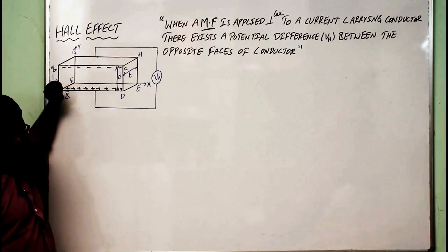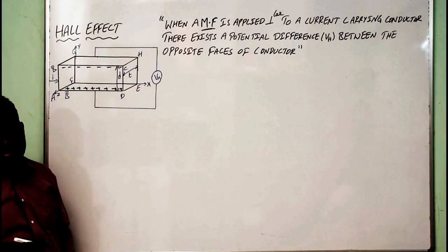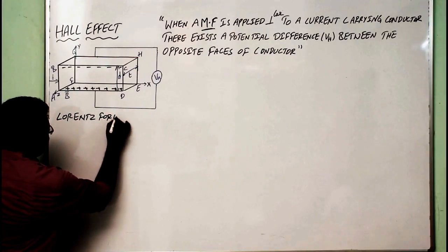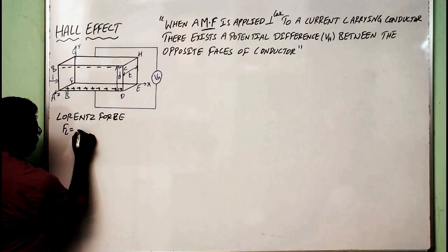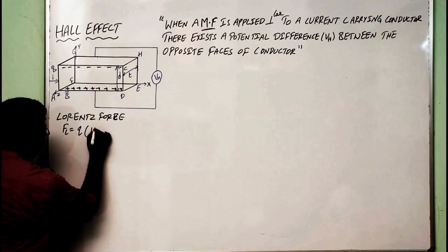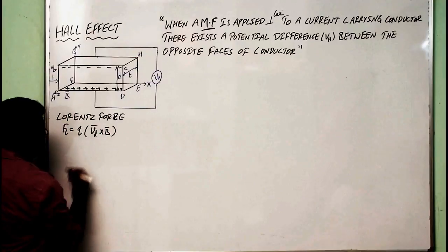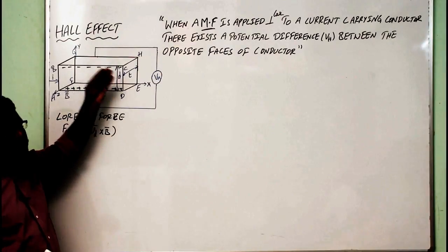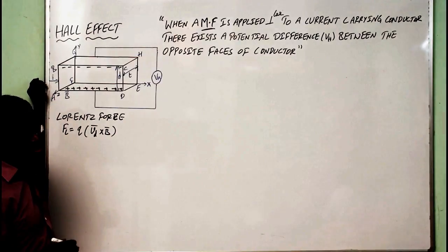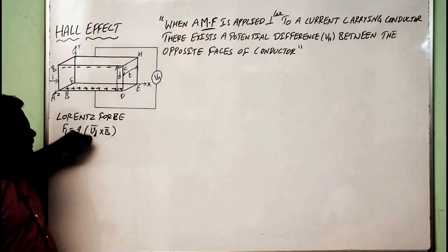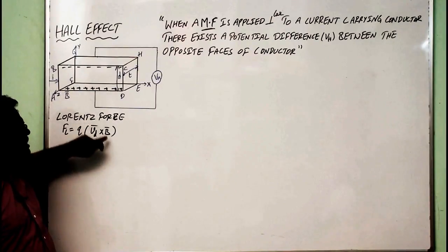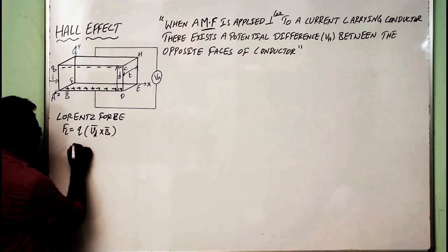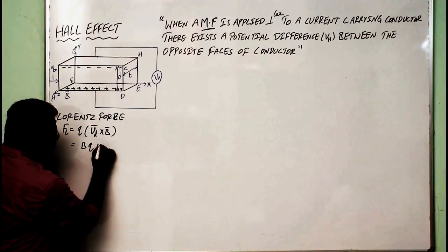Since the charge carriers are moving upwards, there is an upward force acting on the charge carriers. That force is known as the Lorentz force, and the Lorentz force is given by F_L equals Q times V_D cross B, where V_D stands for drift velocity — the velocity acquired by the electron due to the application of electric field. The magnetic field acting on the charge carriers is B, and the charge is Q. Removing the cross product, you can write this as B·Q·V_D (since sine of 90° equals 1). Call this equation 1.